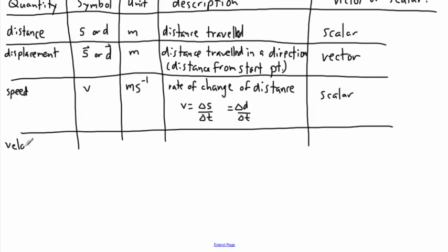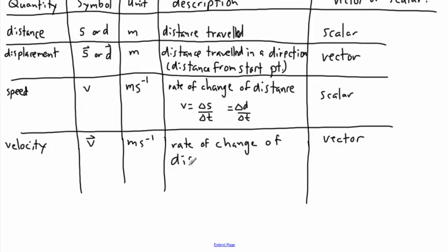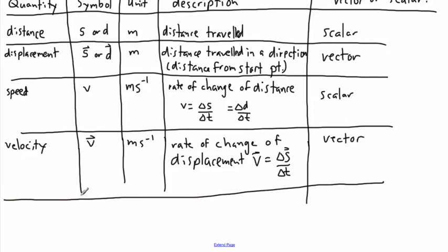We have something called velocity, and that's the vector version of speed. This is obviously a vector. This is still measured in meters per second, and this is the rate of change of displacement this time. This is how the displacement changes with time. I can say V equals delta S over delta T, but this time the vector version. That's how I can say that I have a velocity.